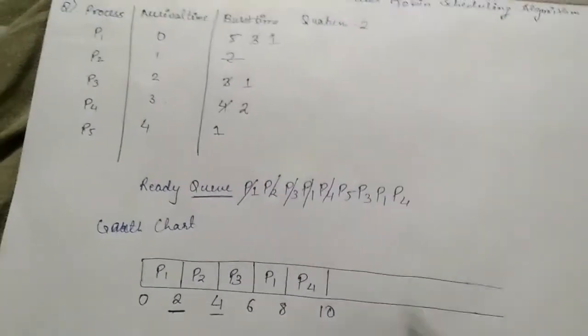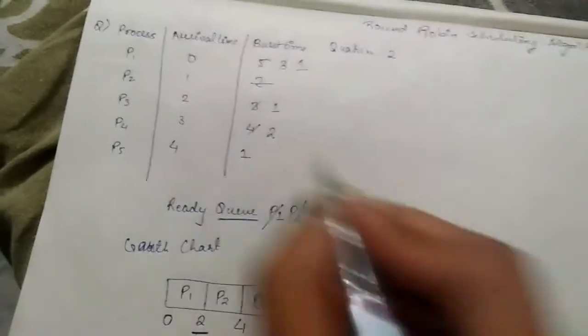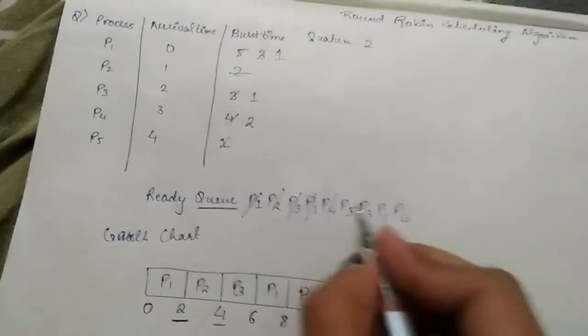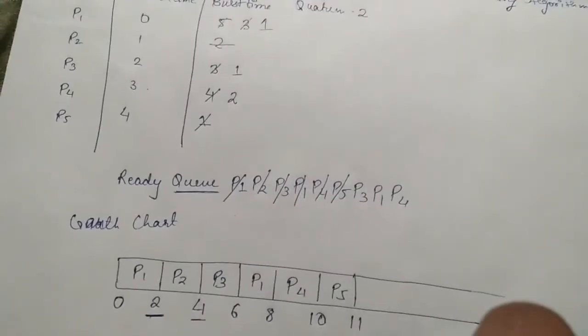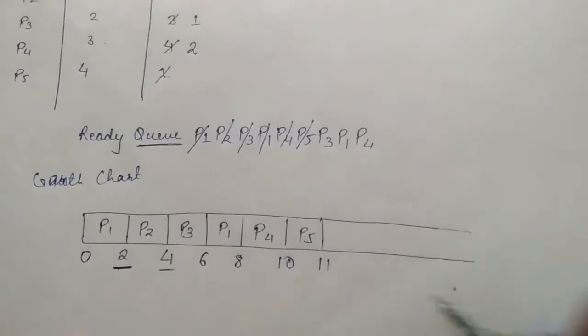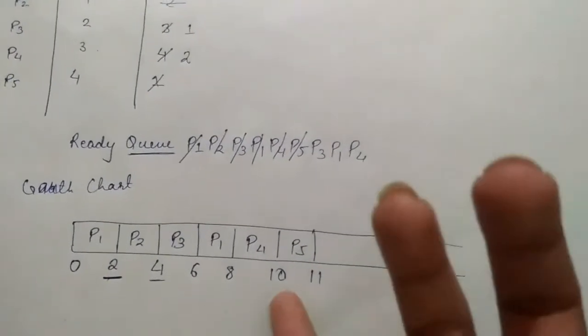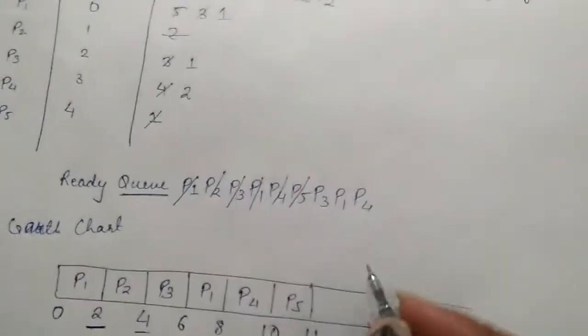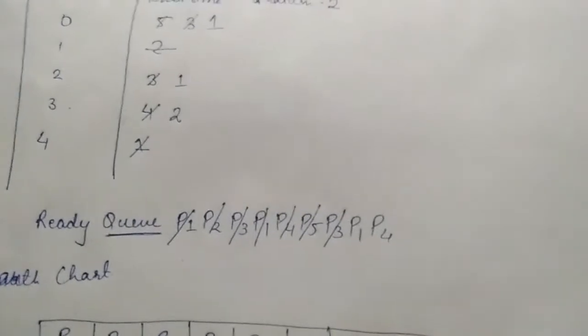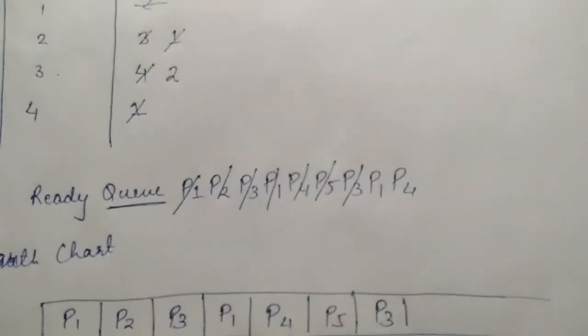Now P5 has only one burst time unit left, so even though the quantum time is two, we only execute it for one unit — from ten to eleven. We don't need to pad it to two units. Then P3 is left with one unit, so it executes from eleven to twelve. P1 is also left with one unit, executing from twelve to thirteen. Finally P4 is left with two units, so it executes from thirteen to fifteen, completing the Gantt chart.